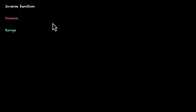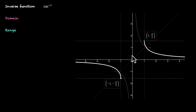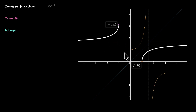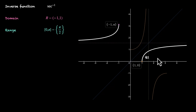Then we have two discontinuous functions: cosecant inverse x and secant inverse x. For cosecant inverse, the domain is the set of all real values except minus one to one — so R minus (−1 to 1). The range is all values from minus π/2 to π/2 except zero. It takes all values from minus π/2 to zero in Q4, and all values from zero to π/2 in Q1. This function will never give zero as output. For secant inverse x, also a discontinuous function, the domain is R minus (−1 to 1) and the range is zero to π except π/2 — covering Q1 and Q2.